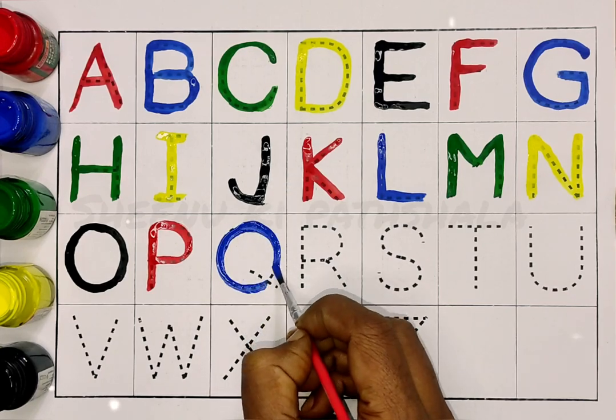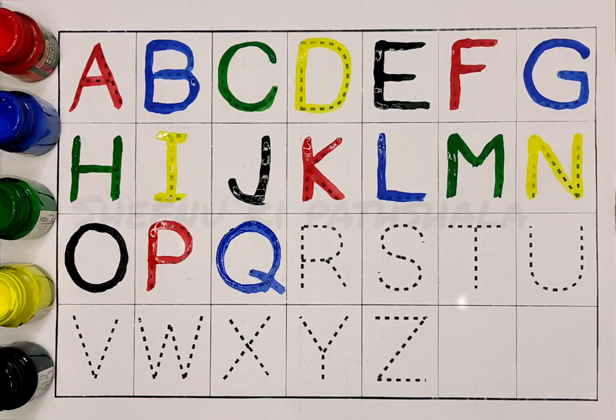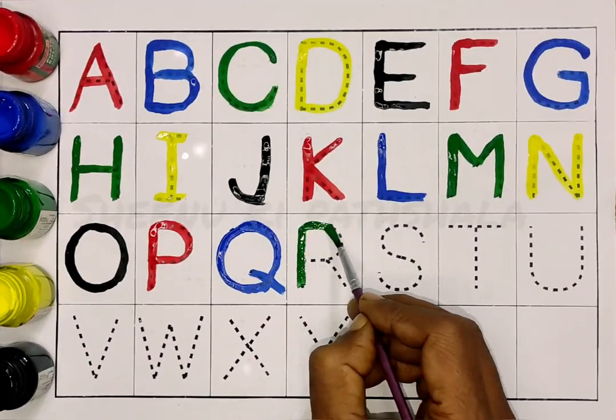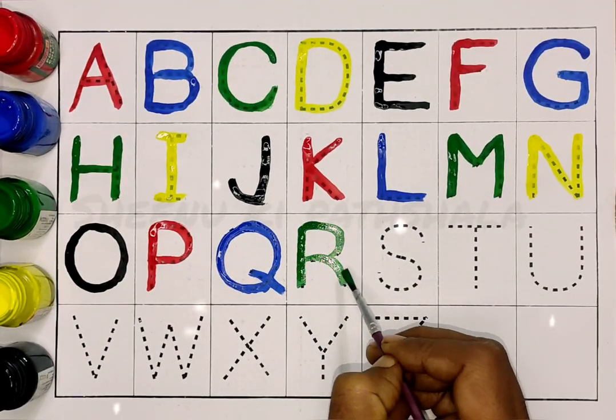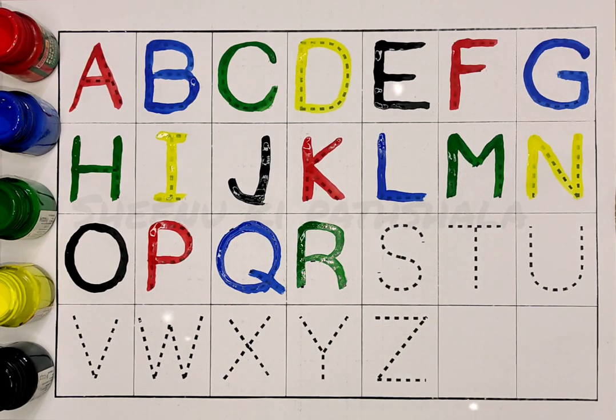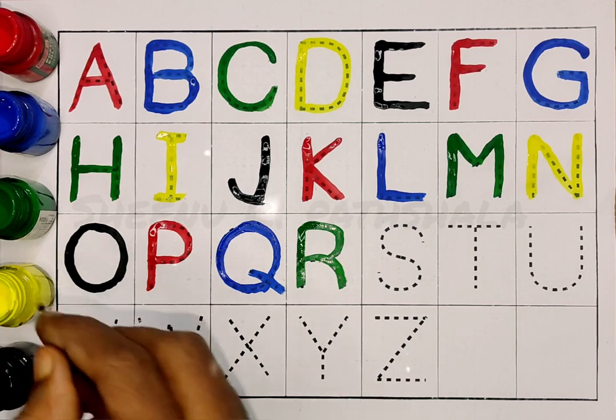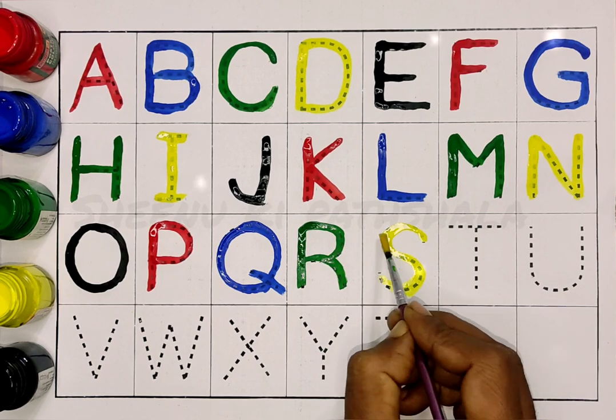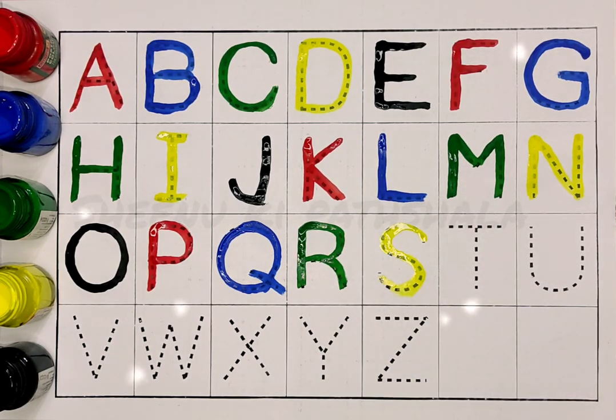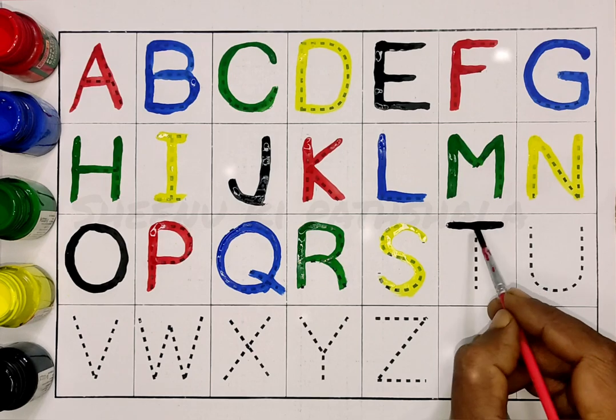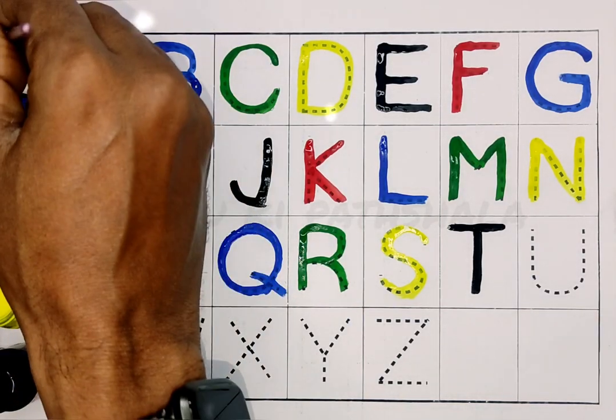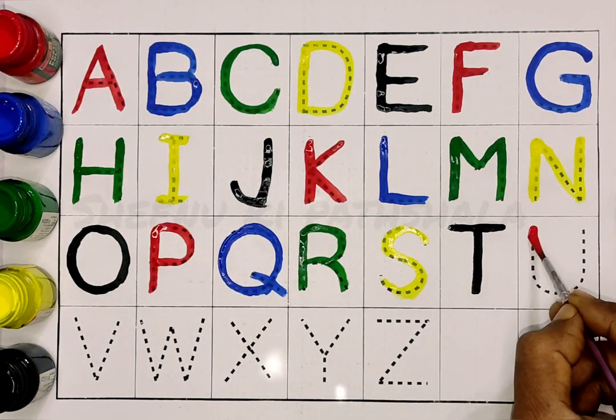Green color. Q, Q for queen. R, R for rabbit. Yellow color. S, S for sun. Black color. T, T for top. Red color.